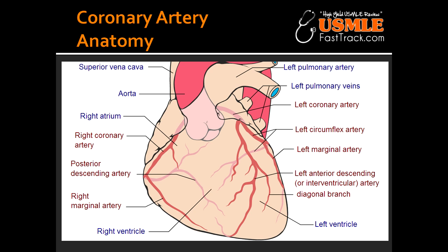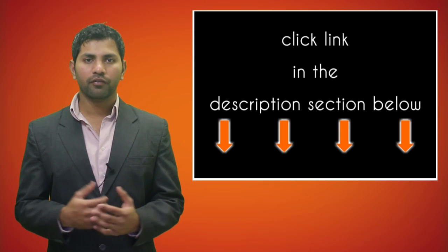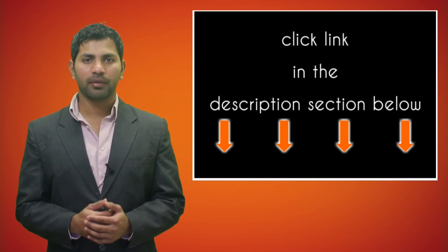What are some conditions in which transesophageal echocardiography would be useful in diagnosing? Transesophageal echocardiography would be useful in diagnosing left atrial enlargement, aortic dissection, or thoracic aortic aneurysm.